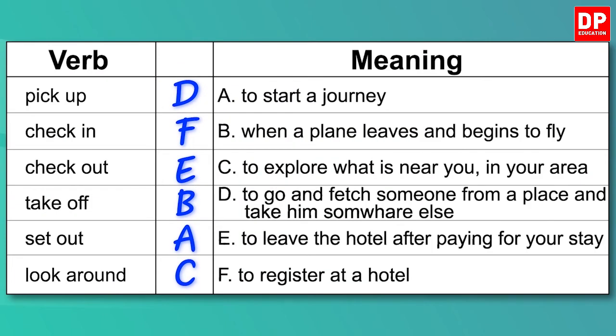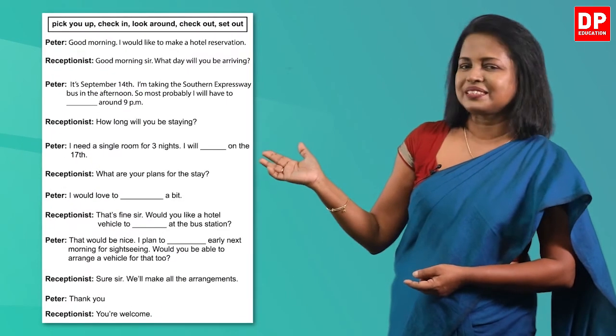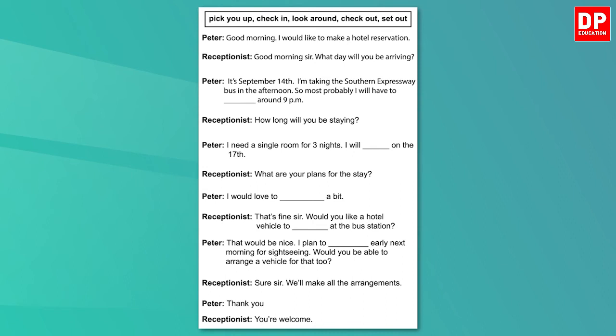I hope you could match the verbs with their meanings correctly. Children, we learned some verbs related to travel, but these verbs can have other meanings too. Now let's do an exam-type activity. You are going to read a dialogue with some words related to travel, but some words of this dialogue are left out. You have to fill in the missing words with the options given. Here is your activity — you can pause the video and try it now.